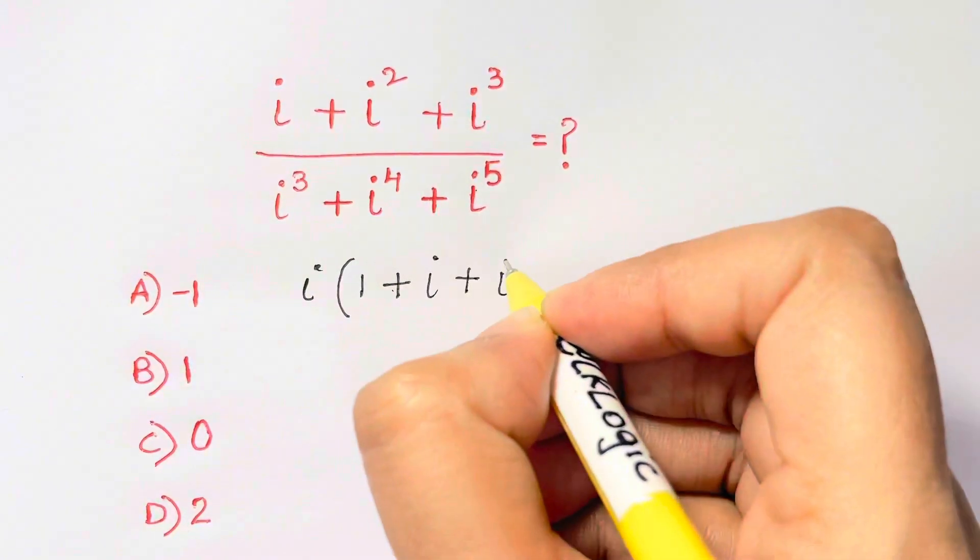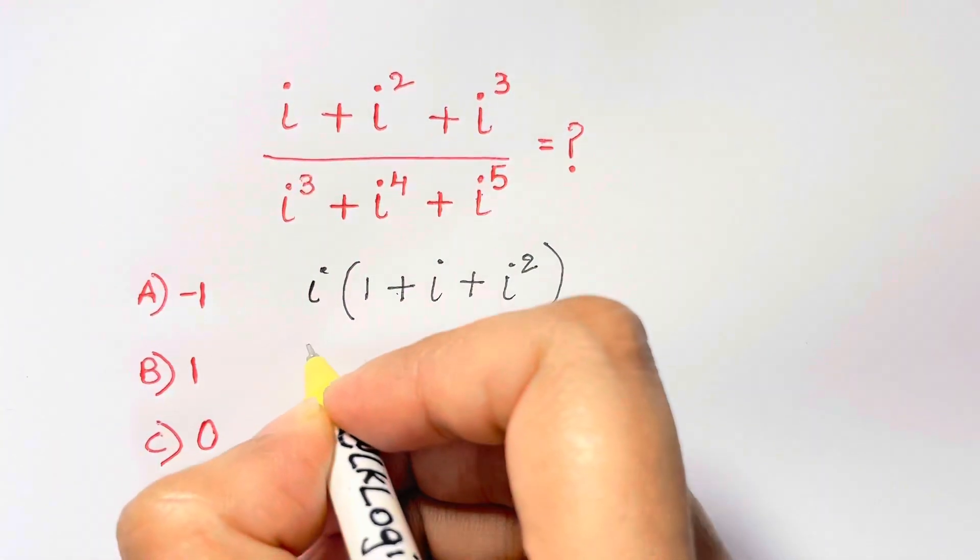I have i left because I've already taken one i, divide plus i cubed over i, I get i squared. And now for the denominator,